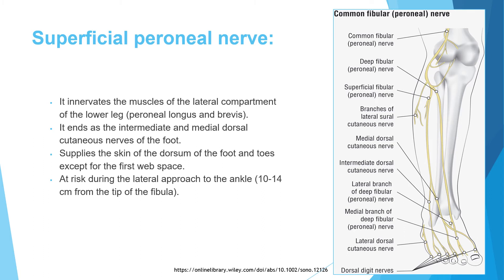The superficial peroneal nerve is at risk in approaches to the ankle and the lateral malleolus. It emerges from the fascia at about 12 cm from the tip of the fibula.